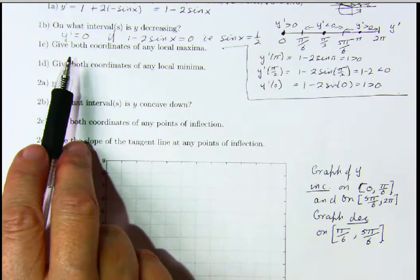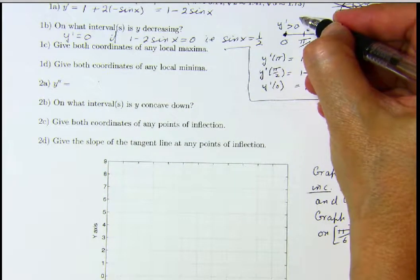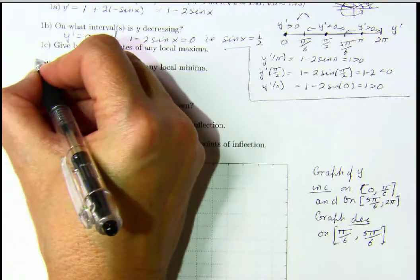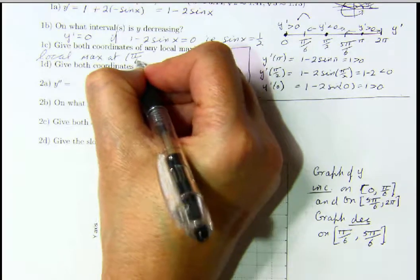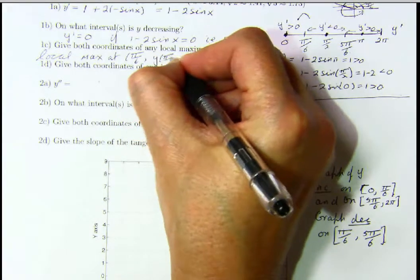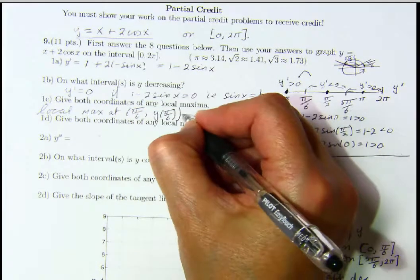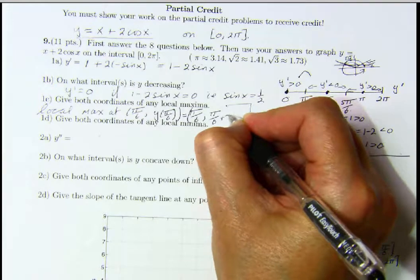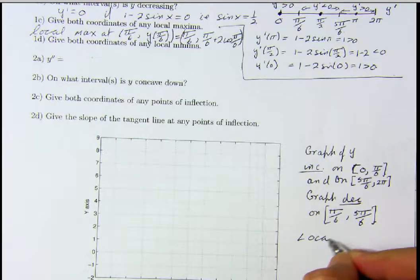We'd like the coordinates of any local maxima or local minima. The derivative goes from positive to negative at π/6, so we have a local maximum at π/6. The second coordinate on the graph is going to be f(π/6), and going back to the original equation, that's π/6 plus 2 times cosine(π/6). When we evaluate this, we have our local max.